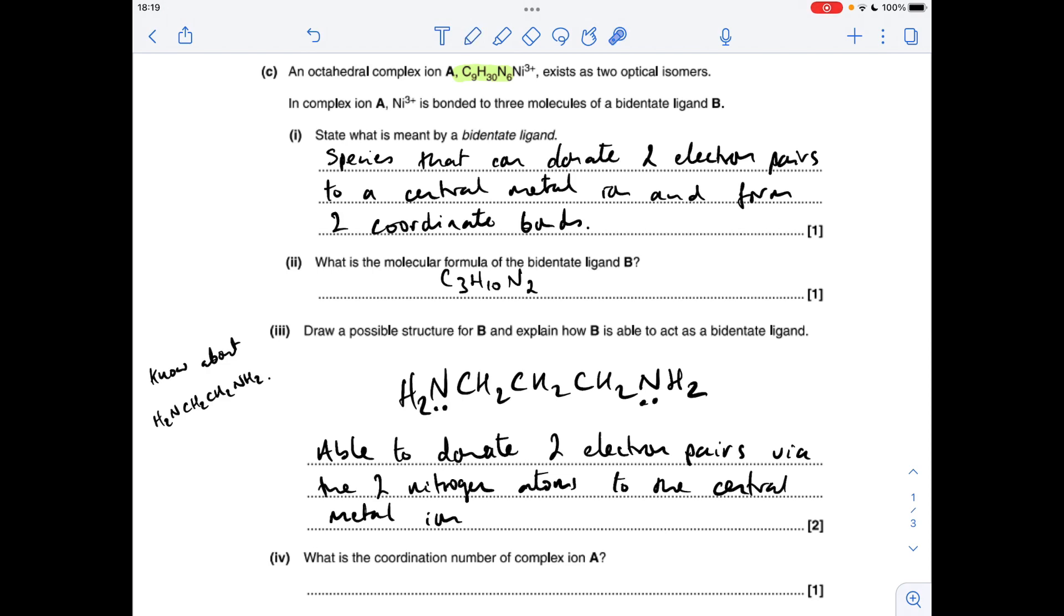Moving on to the coordination number for complex ion A, so it's going to be six, and that's because if you've got three of these ligands, each one can donate two electron pairs, so there's actually six coordinate bonds going to the central metal ion.